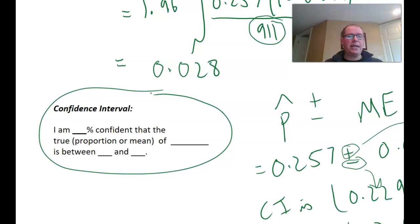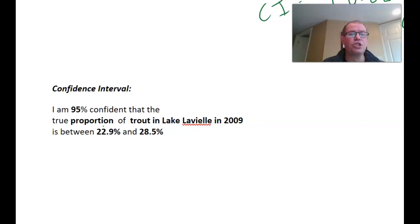Now we write it in context. This is your standard sentence that you're always going to use: I am 0% confident that the true 0% of 0% is between 0% and 0%. There we have it, our confidence interval. I'm 95% confident that the true proportion of trout in Lake Lavier in 2009 is between 22.9% and 28.5%.